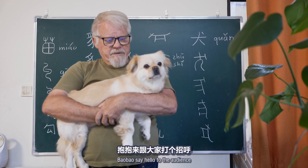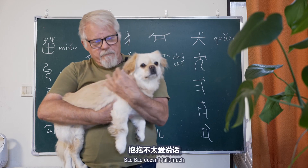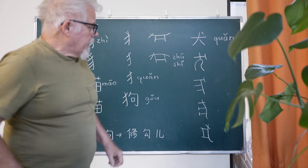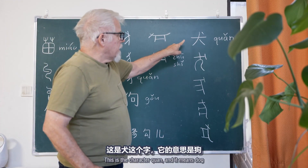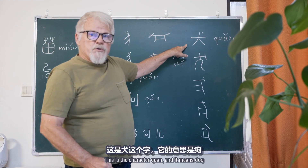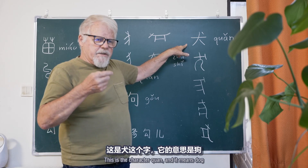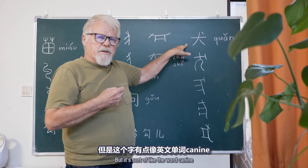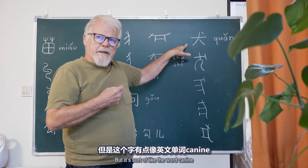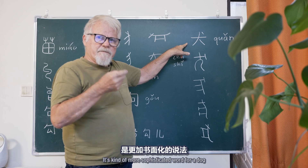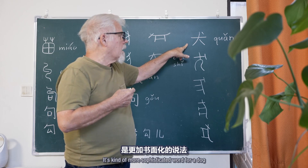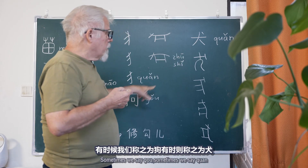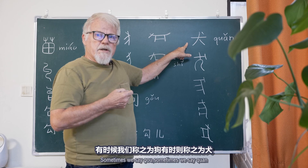Baobao, say hello to the audience. Baobao doesn't talk much. This is the character quǎn, and it means dog, but it's sort of like the word canine — it's a more sophisticated word for dog. Sometimes we say gǒu, sometimes we say quǎn.